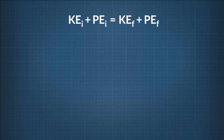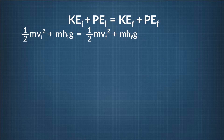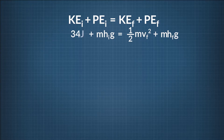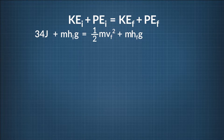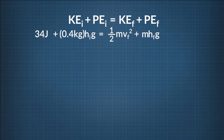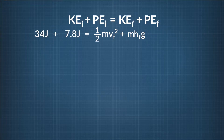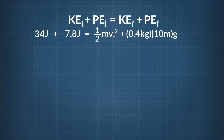Let's apply this to our question. We can substitute our equations for kinetic and gravitational potential energies into the law of conservation of energy, seen here. We know three things. First, our initial kinetic energy is one-half times the mass, 0.4 kilograms, times the initial velocity, 13 meters per second squared, which equals 34 joules. Second, our initial gravitational potential energy is mass 0.4 kilograms times the initial height 2 meters times the acceleration due to gravity 9.8 meters per second squared, or 7.8 joules. And third, our final gravitational potential energy is the mass 0.4 kilograms times the final height 10 meters times the acceleration due to gravity 9.8 meters per second squared, or 39 joules.